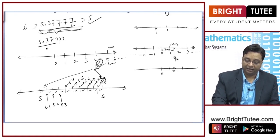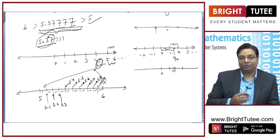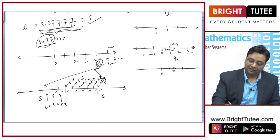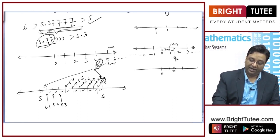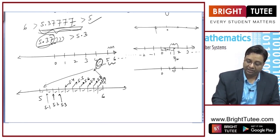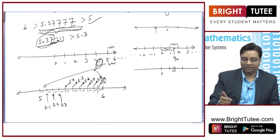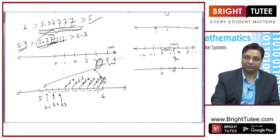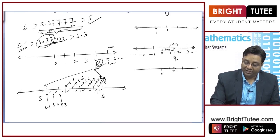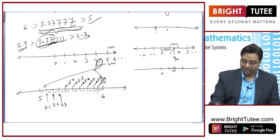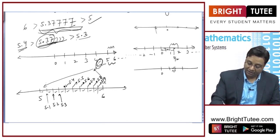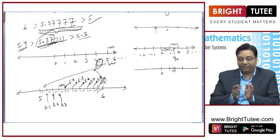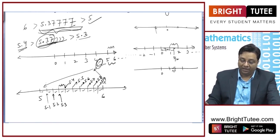Now, where will 5.37 lie? Setting aside the repeating 7s for now, 5.37 is definitely greater than 5.3 and lesser than 5.4 — it will never reach 5.4. So the gap I am concerned about is between 5.3 and 5.4.